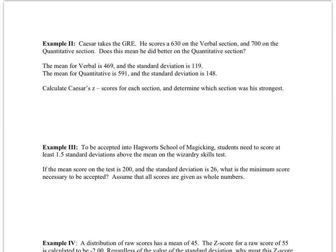In example two, we have Caesar taking the GRE, and he scores 630 on verbal and 700 on quantitative. We want to know which one did he do better on, because it's hard to compare these scores. Numerically, 700 sounds better than 630. However, without knowing the average and standard deviation, we don't really know which one's better. The mean for verbal is 469 with a standard deviation of 119, and the mean for quantitative is 591 with a standard deviation of 148. We're going to find the z-score for each section.